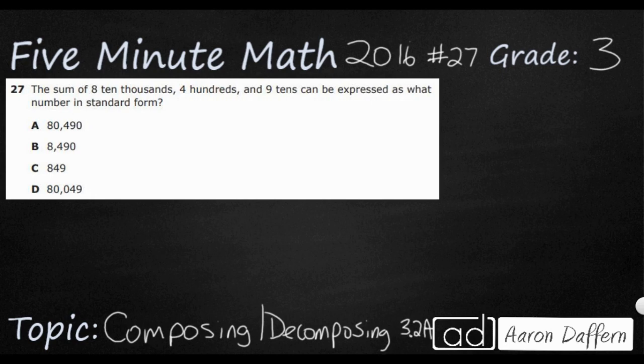This seems like a pretty straightforward problem here. The sum of eight ten thousands, four hundreds, and nine tens can be expressed as what number in standard form? So this is in what we call the number word form. We see the digits - eight, four, and nine - and then we see the words that represent each place value: ten thousands, hundreds, and tens.